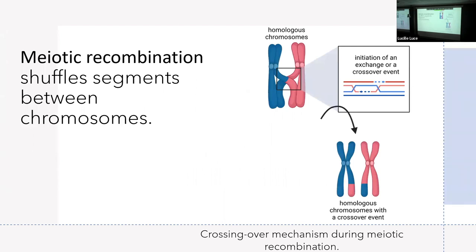Let's start with what is meiotic recombination. Meiotic recombination takes place during meiosis I, and at a high level is essentially just shuffling of genetic segments between chromosomes. As you can see in the schematic, you have two homologous chromosomes. They're paired and undergoing an exchange. You zoom in on this area, and this is called the double holiday junction — it's the actual site of the exchange. Eventually the double holiday junction gets resolved into a crossover event, and you can see the homologous chromosomes swapped a segment.